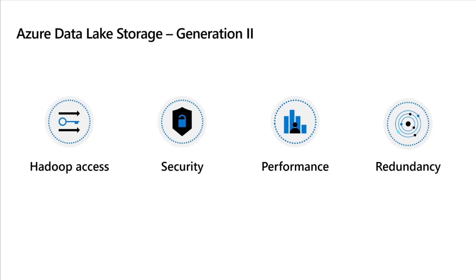Azure Data Lake has two generations: generation one and generation two. Generation one is getting deprecated, so we are not concerned about it — and it doesn't even provide the same functionalities as generation two. Later on at the whiteboard, I'll explain the difference between generation one and generation two a little more. Right now, generation two is what we use in production, and that's what we are concerned about.